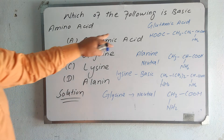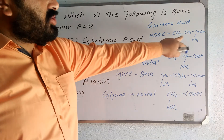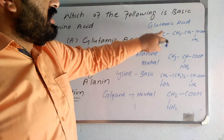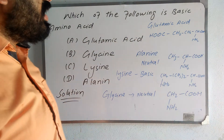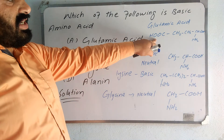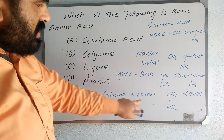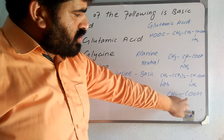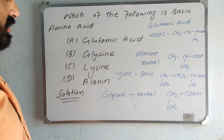First of all, glutamic acid has the structure: COOH-CH₂-CH₂-CH(NH₂)-COOH. It has two COOH groups, which gives acidic behavior. Glycine's formula is CH₂(NH₂)-COOH. That is a neutral amino acid.